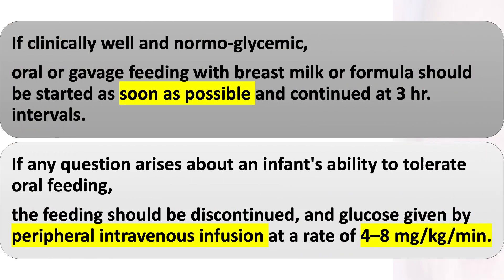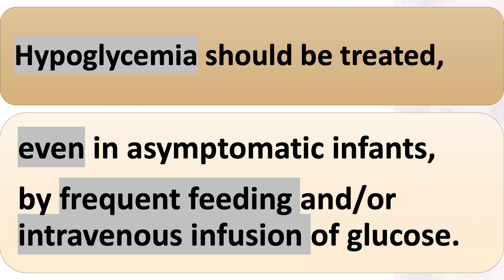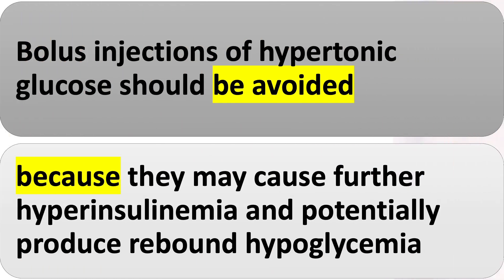If clinically well and normoglycemic, oral or gavage feeding with breast milk or formula should be started as soon as possible and continued at 3-hour intervals. If any question arises about an infant's ability to tolerate oral feeding, the feeding should be discontinued and glucose given by peripheral intravenous infusion at a rate of 4–8 mg/kg per minute. Hypoglycemia should be treated even in asymptomatic infants by frequent feeding and/or intravenous infusion of glucose. Bolus injections of hypertonic glucose should be avoided, as they may cause further hyperinsulinemia and potentially produce rebound hypoglycemia.